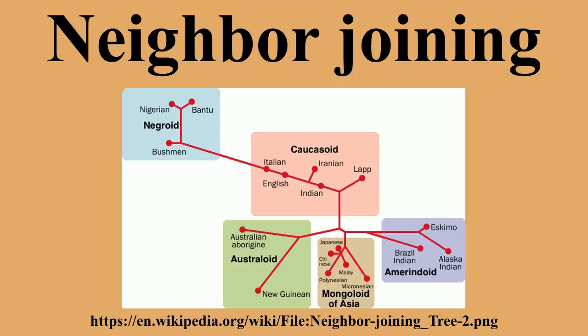Neighbor joining may be viewed as a greedy algorithm for optimizing a tree according to the balanced minimum evolution (BME) criterion. For each topology, BME defines the tree length to be a particular weighted sum of the distances in the distance matrix, with the weights depending on the topology. The BME optimal topology is the one which minimizes this tree length. Neighbor joining at each step greedily joins the pair of taxa which will give the greatest decrease in the estimated tree length. This procedure is not guaranteed to find the topology which is optimal by the BME criterion, although it often does and is usually quite close.